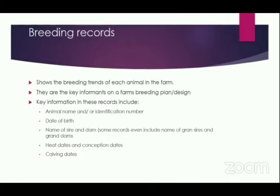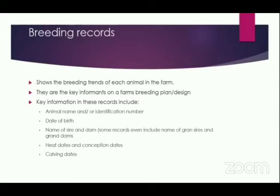The key information in breeding records includes the animal's name or ID number, date of birth, name of the sire and the dam — some records include the grand sire and grand dam — to know from which animal and breed this one came, and whether the performance of the daughter matches or exceeds that of the dam and sire. We also look at heat dates, whether the animal conceived, whether it had a silent heat, and how many services it required before conception.